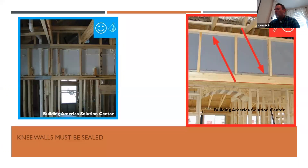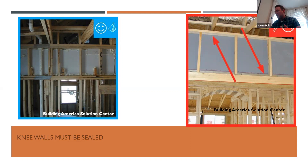Any knee walls going from conditioned space to unconditioned space — all of those joints have to be sealed. You see foam sealing the knee wall; there needs to be a solid air barrier material there, and we need to make sure there are no gaps between those spaces.